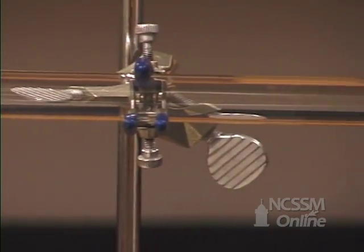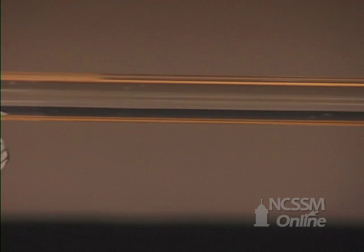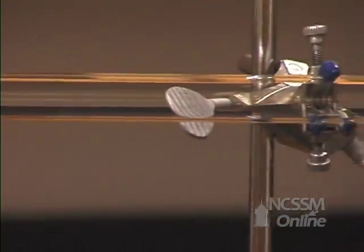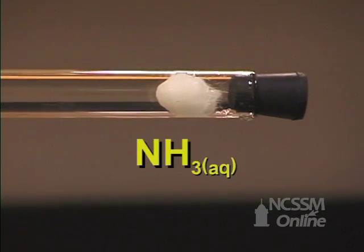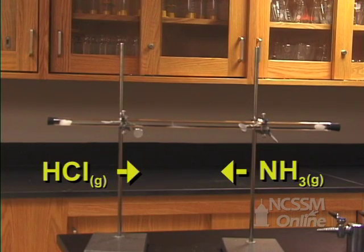The HCl and the ammonia escape from the solution. The gas travels down the tube. The rate at which the gas travels down the tube is dependent upon the molar mass of the gases.